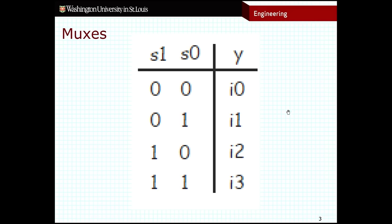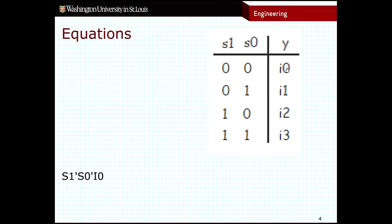So in terms of creating this, we only need to consider the cases where the input signals are true. So the first term looks something like this: S1', S0', and I0 where I0 is true. If I0 is false, then we don't really care about what this term becomes. We just want the output to be false.